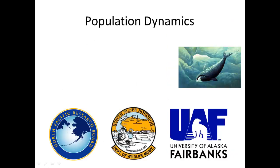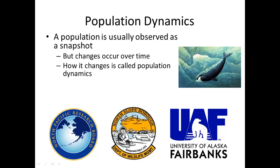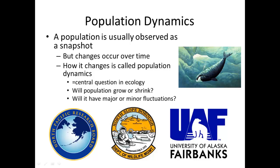A population is usually observed as just a snapshot — how many are in this population? But to understand the dynamics of the population, you have to look at it over time. How it changes is called population dynamics, which is the central question in ecology: will this population grow or shrink, and what are the major and minor fluctuations? There are a number of research organizations — the University of Alaska Fairbanks, the North Slope Borough, and the North Pacific Research Board — interested in understanding these population dynamics.